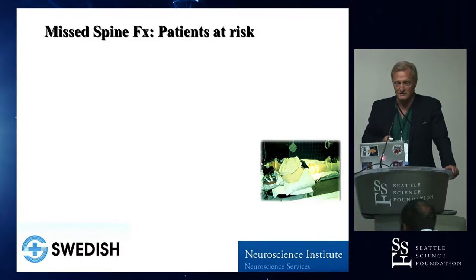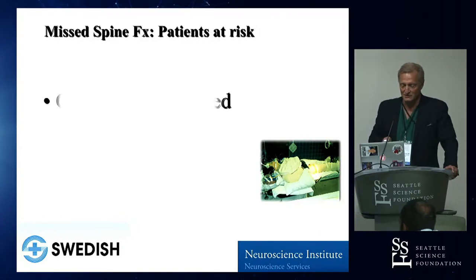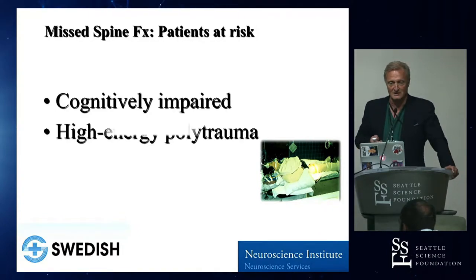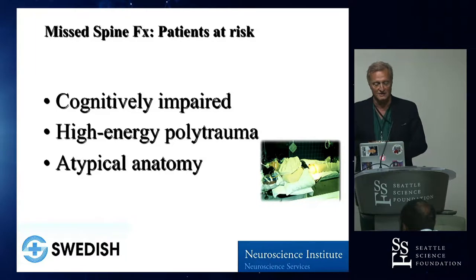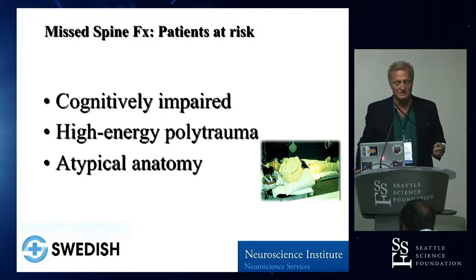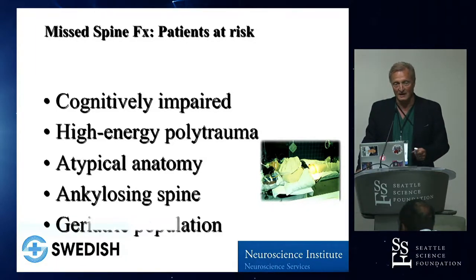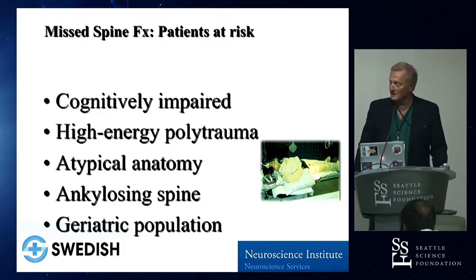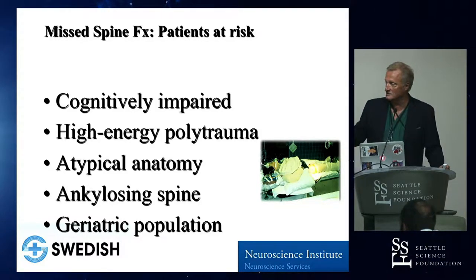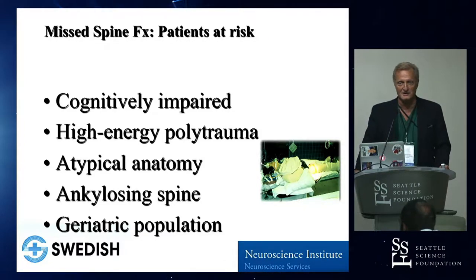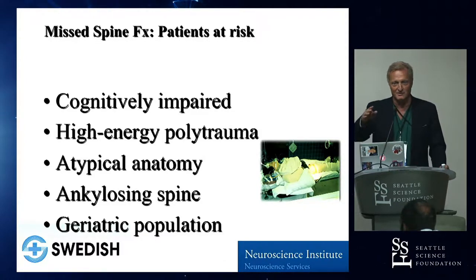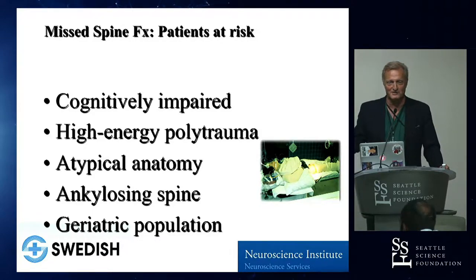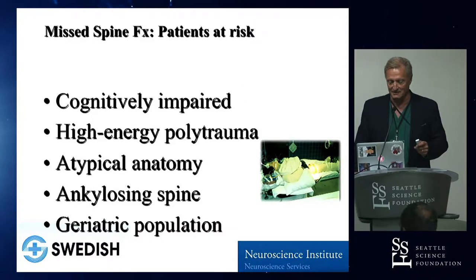The classic patients at risk for any question situation are cognitively impaired patients, high-energy polytrauma patients, and patients with atypical anatomy. The ankylosing spines and geriatric populations are the latest, worst bane of our existences — they are superimposed populations. We even have a geriatric trauma service here now, and we're not even a trauma hospital. It's amazing what's happening in the world.